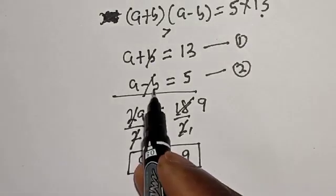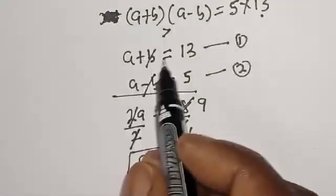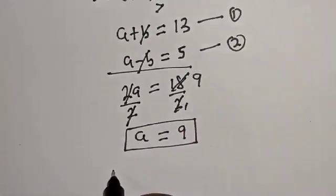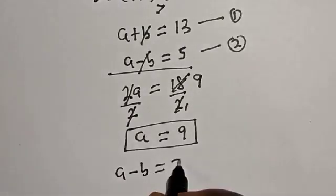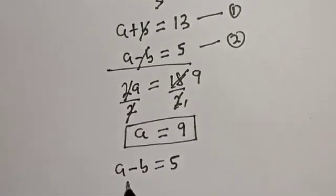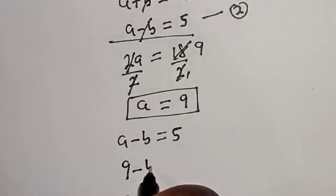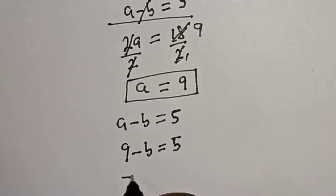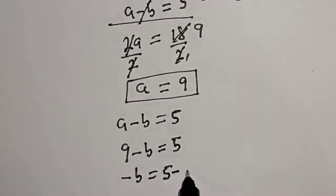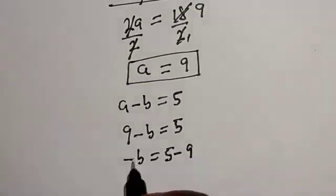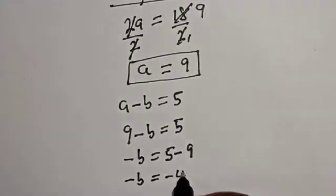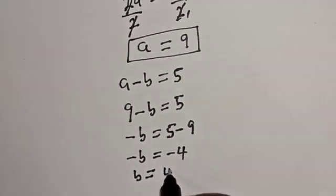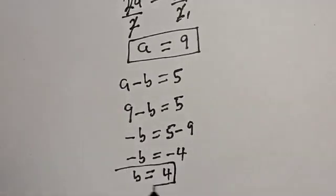Now we can solve for b. Using equation 2: a minus b equals 5, and a is 9, so 9 minus b equals 5. Therefore minus b equals 5 minus 9, which is minus 4, so b equals 4.